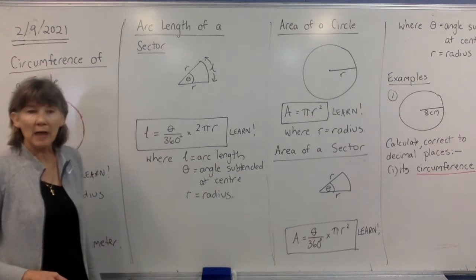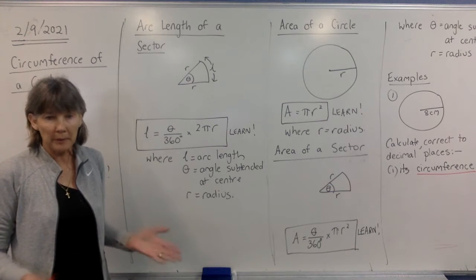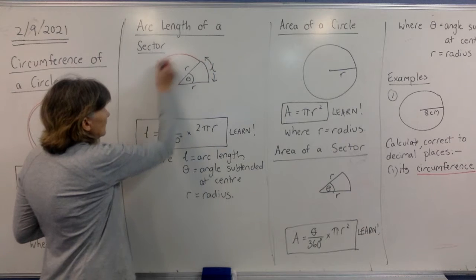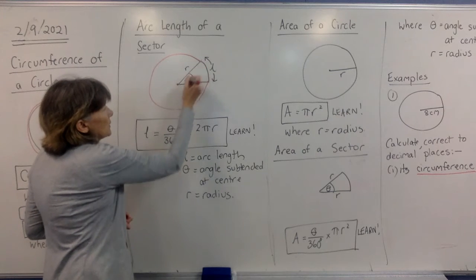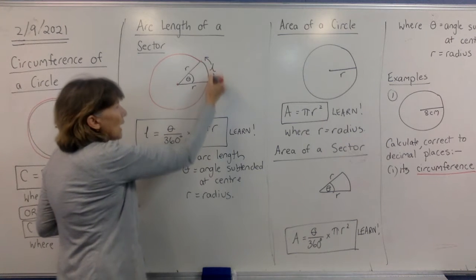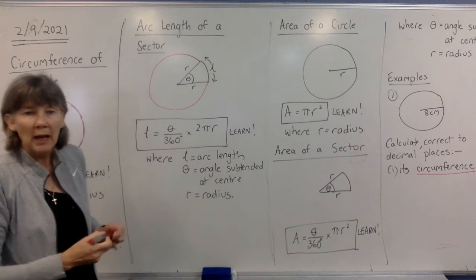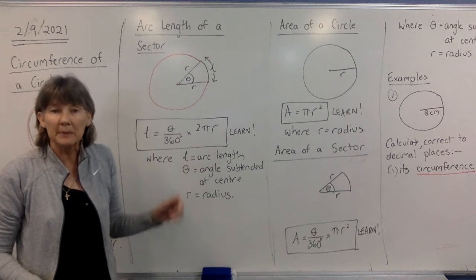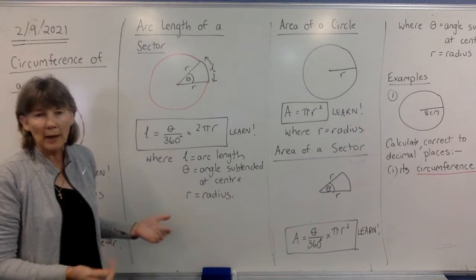The next thing we have is arc length of a sector. I've drawn a sector here, it's like having a piece of pie or a piece of pizza. You can imagine that piece of pie is part of a whole pie. This is the center of the circle, these two lines are radii. This is what we call the arc length. And then we have an angle which we are calling theta, the angle subtended at the center of the circle of that sector. The word subtended does confuse people, it's just the angle at the center of that sector.